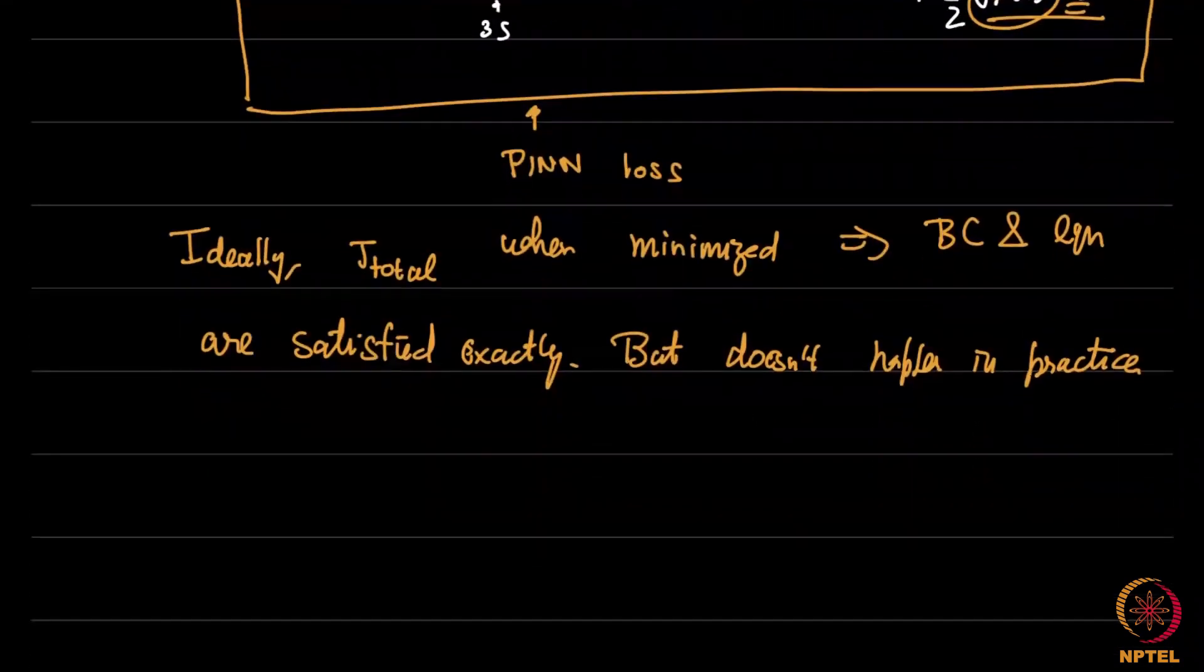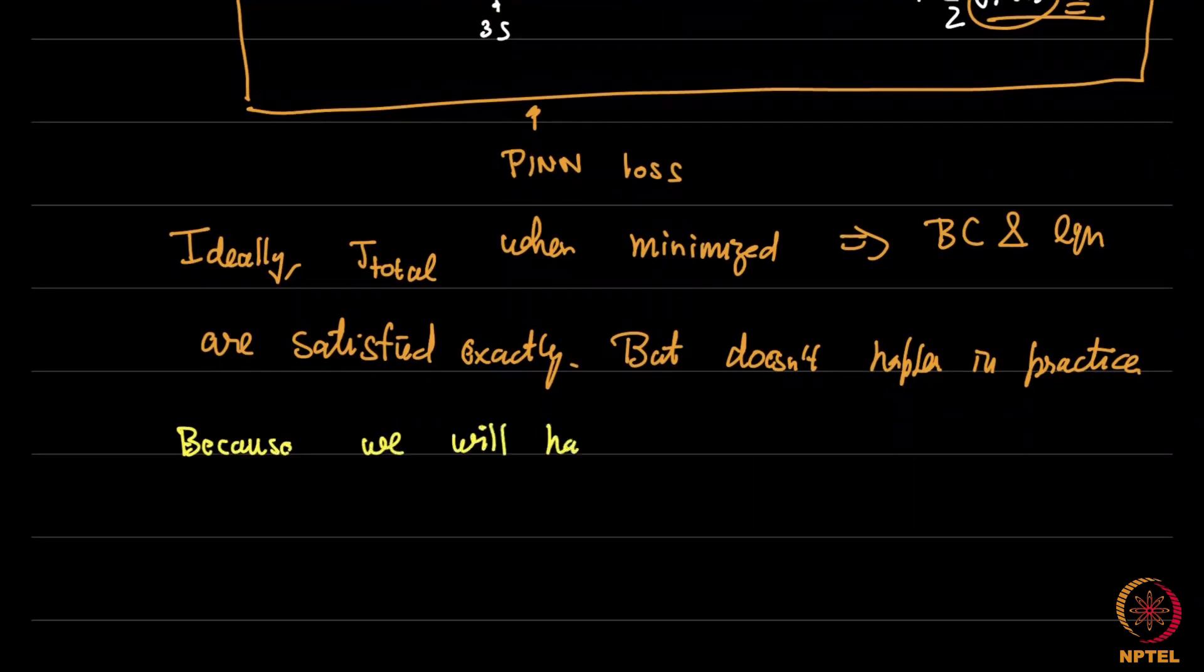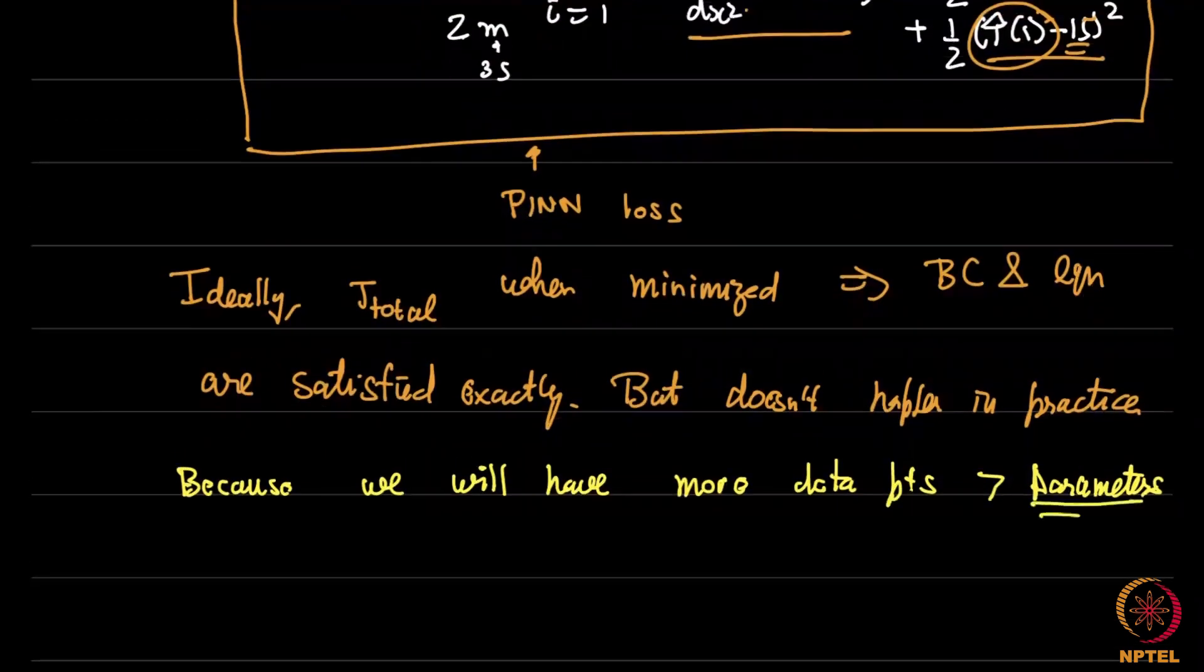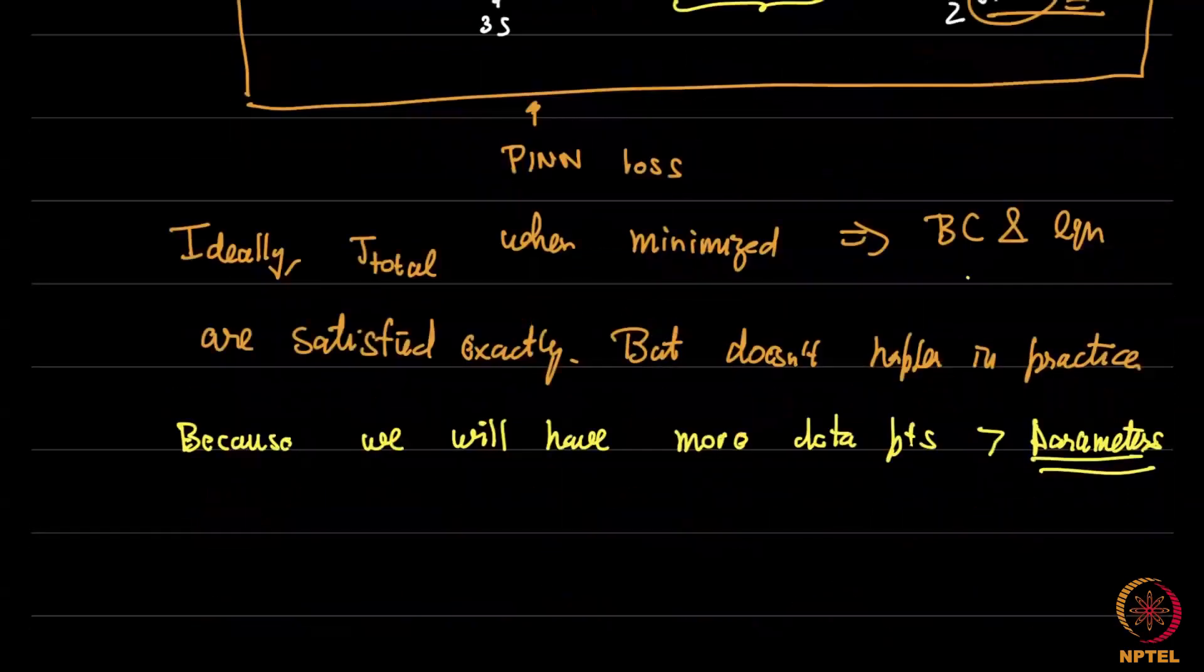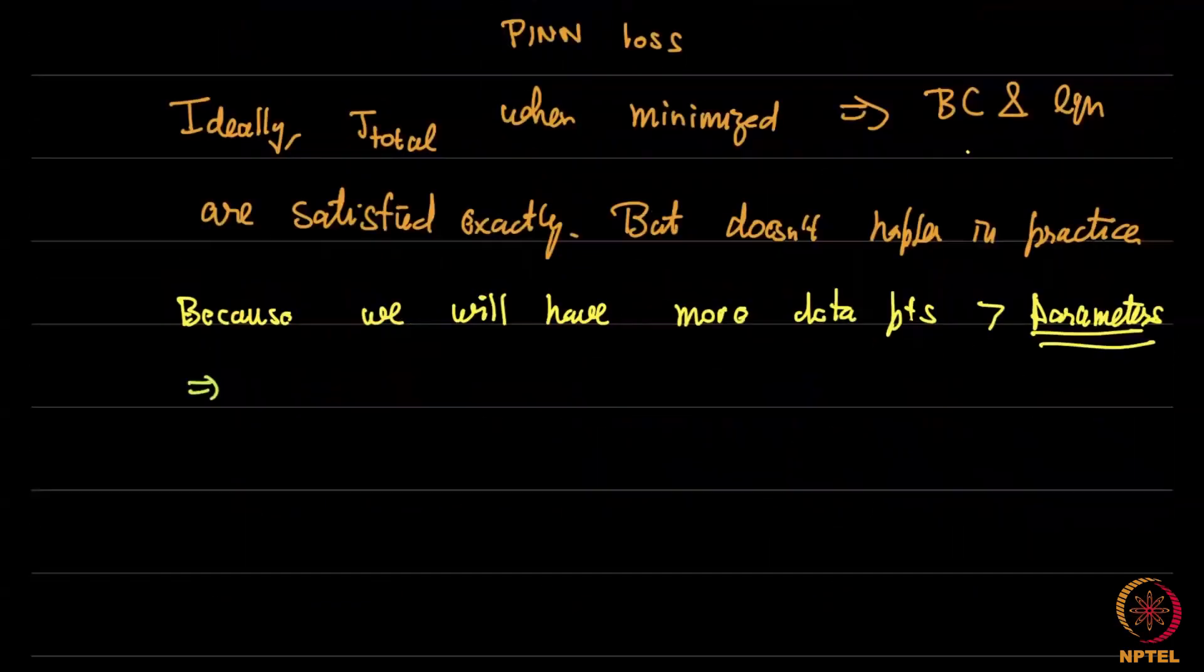So typically you will have more problems than this. You will not be able to satisfy these exactly. That is because you will have more equations than unknowns. So because we will have typically more data points compared to the number of parameters. So this is an important thing to consider while doing PINs. This does not get often discussed. The number of parameters in PINs in the neural network that we use should be fewer than the number of points where we apply these conditions just so that it is effectively a least square solution that occurs. But even though this does not occur, we tend to get a least square solution but a good solution.